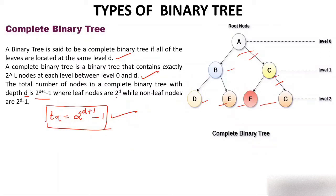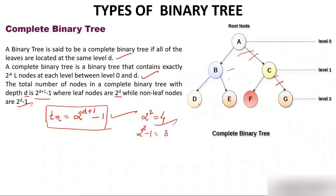Leaf nodes in a complete binary tree of depth D = 2^D. With D = 2, that is 2^2 = 4 leaves — counting gives four, which is correct. Non-leaf nodes = 2^D − 1. With D = 2: 2^2 − 1 = 3 non-leaf nodes — counting gives three. Both formulas are working correctly.